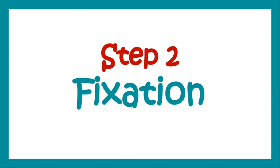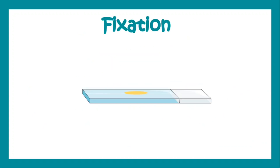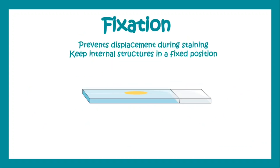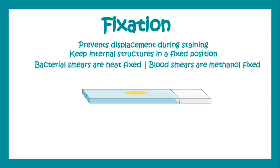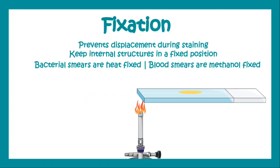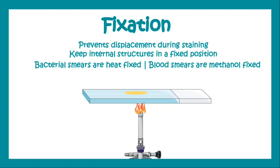After that we go for fixation. Fixation prevents displacement during staining and keeps the internal structures in a fixed position. In case of a bacterial smear we use heat fixation, and in case of a blood smear we do fixation with methanol. With a Bunsen burner we do heat fixation by moving the slide over the flame.